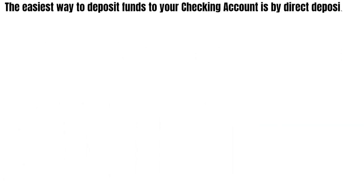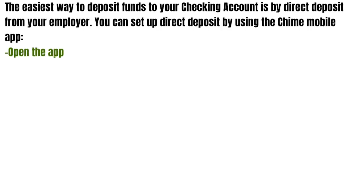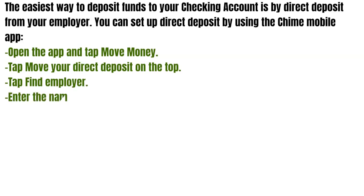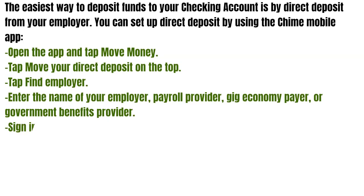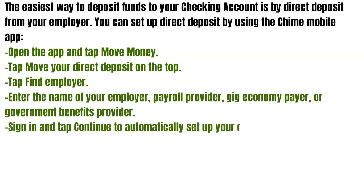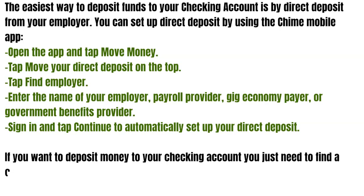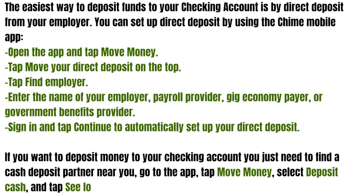The easiest way to deposit funds to your checking account is by direct deposit from your employer. You can set up direct deposit by using the Chime mobile app. First, open the app and tap move money, then tap move your direct deposit on the top, and then tap find employer. Enter the name of your employer, payroll provider, gig economy payer, or government benefits provider, then sign in and tap continue to automatically set up your direct deposit.